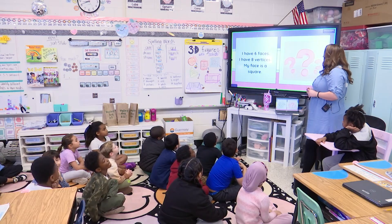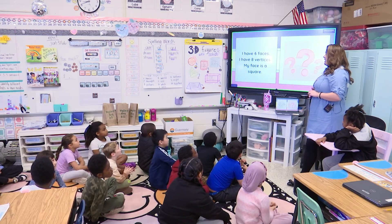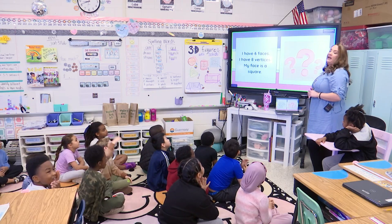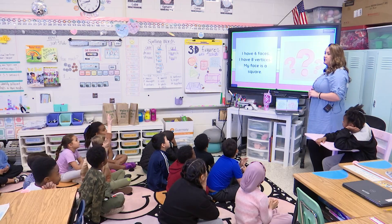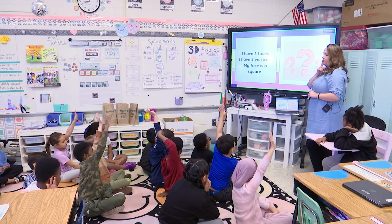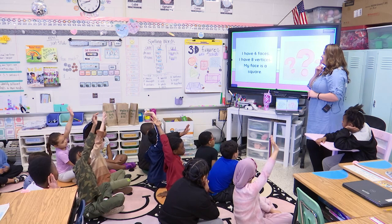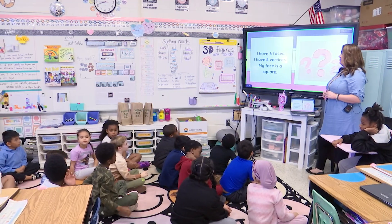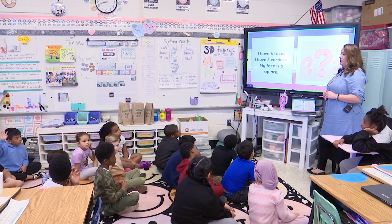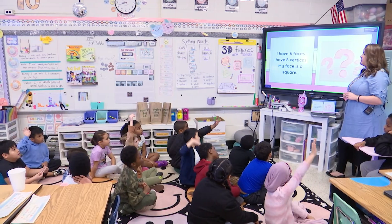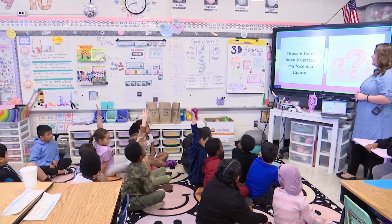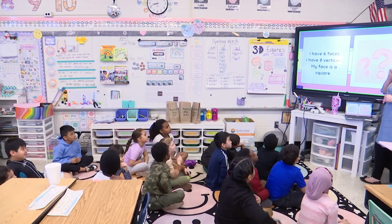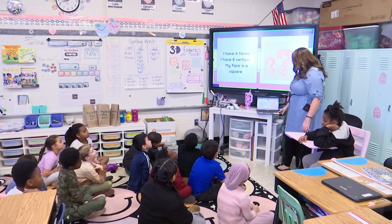Let's see if you can figure out what 3D shape it is. I have six faces, I have eight vertices, and my face is a square. Raise your hand when you know. The answer is a cube — the square face was your key giveaway. Square faces and eight vertices. Good job.